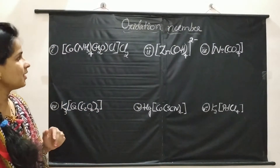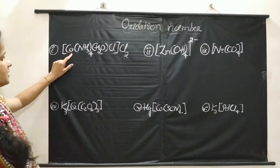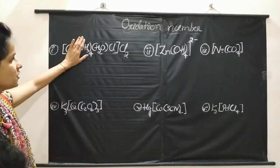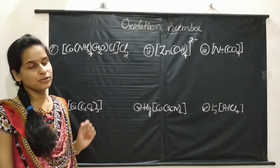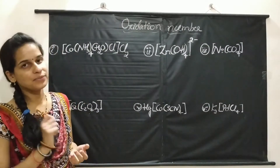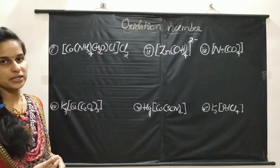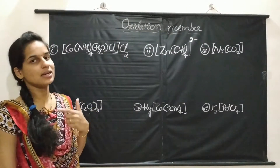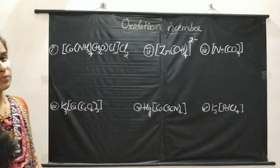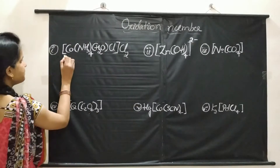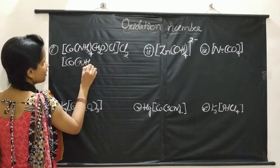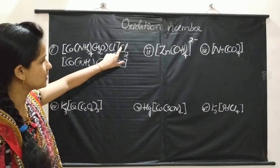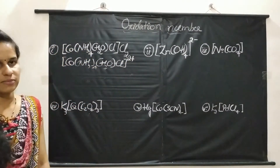In the first example, let me write the charge of the coordination sphere. The complex is [Co(NH3)4(H2O)Cl]Cl2. The coordination sphere comes first, followed by the counter ions, meaning the coordination sphere is positively charged. The counter ions are 2 Cl⁻ ions, so the charge on the coordination sphere will be 2 plus.